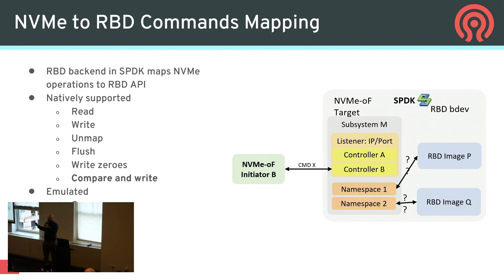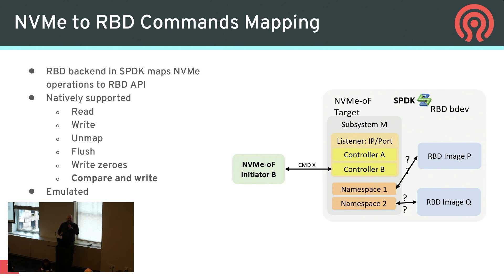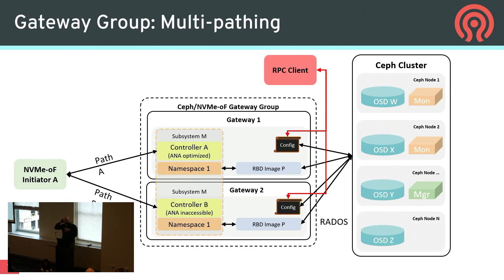NVMe to RBD command mapping: almost all of the native NVMe commands have been mapped back to RBD. The reason for this is efficiency, simplicity, and performance. If all of these commands can be mapped to RBD-native, the performance should be as close to RBD as we can get. It's not going to be exact, but we do have a great improvement over iSCSI. We did have to emulate a couple of commands by design, so not everything can be a one-to-one.